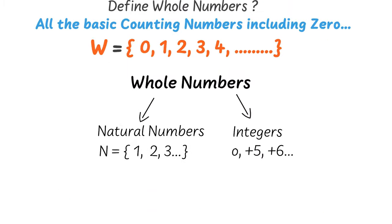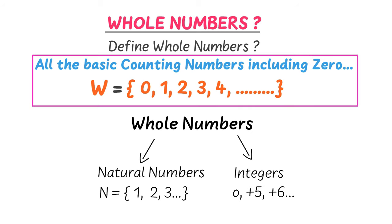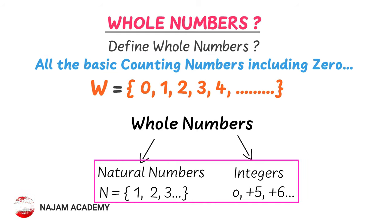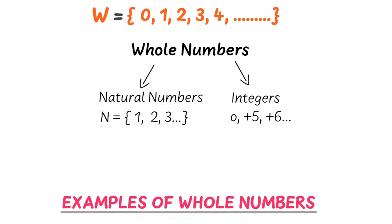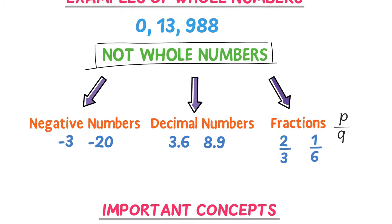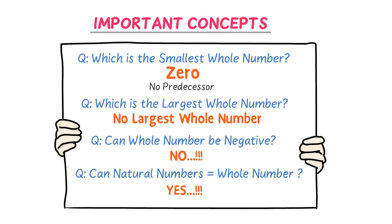To summarize: all basic counting numbers are whole numbers like 0, 1, 2, 3, and so on, and the set of whole numbers is denoted by W. All natural numbers and positive integers are also whole numbers. Numbers like minus 20, 3.6, and 1 upon 6 are not whole numbers. Finally, 0 is the smallest whole number and there is no largest whole number.